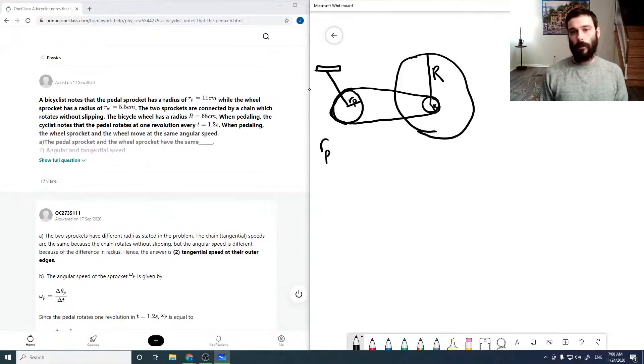So, Rp is 11 centimeters, Rw is 5.5 centimeters, and capital R is 68 centimeters.